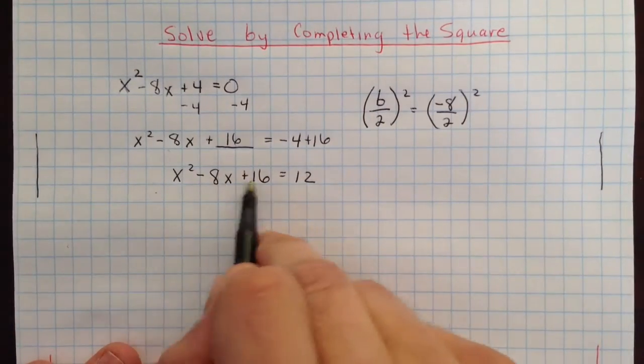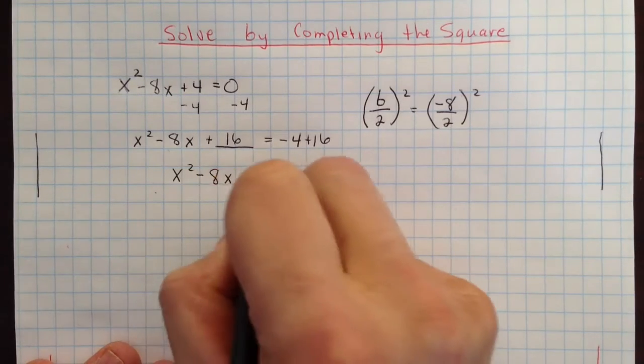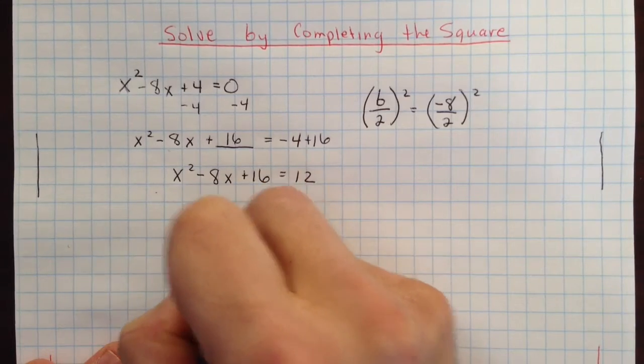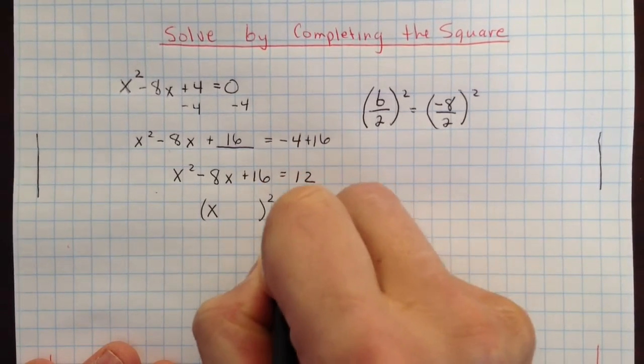Now we need to factor this. So we're going to factor this into the two parts it goes into. If you remember back to here, how we do this, we take the x from here. There's going to be two of these, we square it, but really there's two of them.